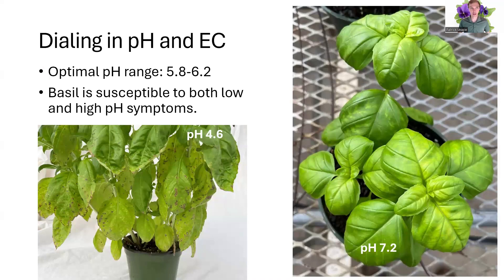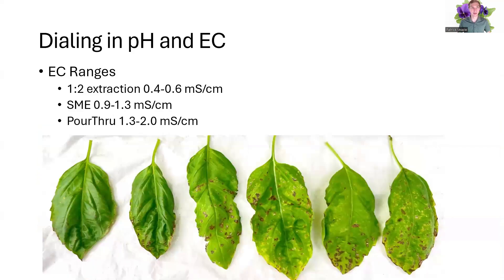For dialing in your pH and EC, basil is susceptible to both low and high pH problems, but is optimal between 5.8 and 6.2. Your low pH problems — shown here on the left at a pH of roughly 4.6 — show necrotic spotting occurring from manganese and iron accumulation in the lower foliage. When the pH gets too high in the new foliage, you begin to see interveinal chlorosis as a result of iron deficiency due to the high pH.